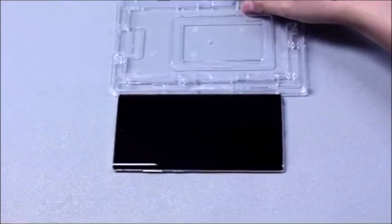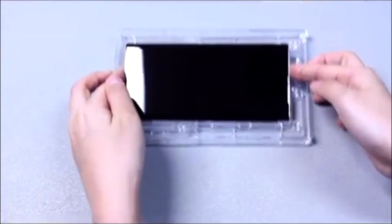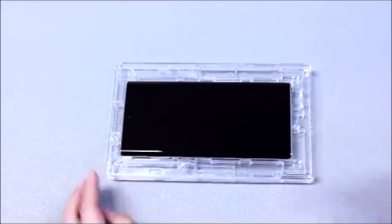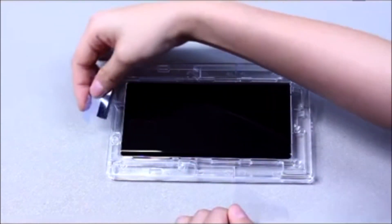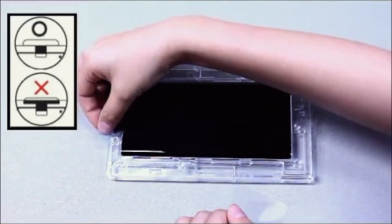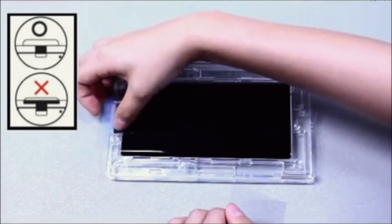Place your Note 10 in the bottom tray, making sure your speaker is at the top. Here is the adhesive tape to cover the top speaker. Make sure it covers only the speaker. The edge of the tape should align evenly with the top of the tray.